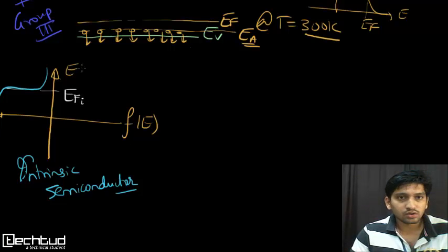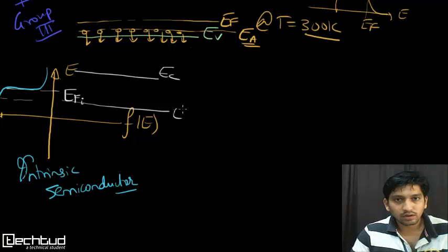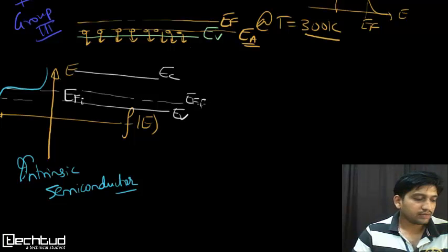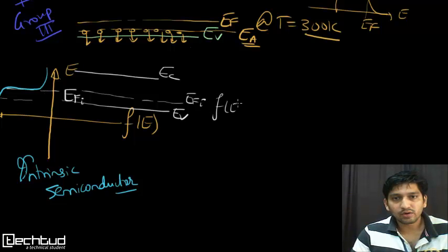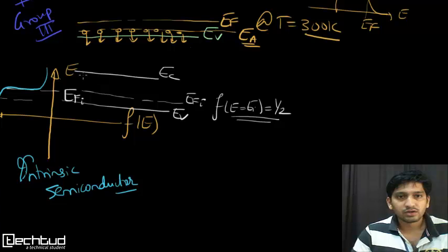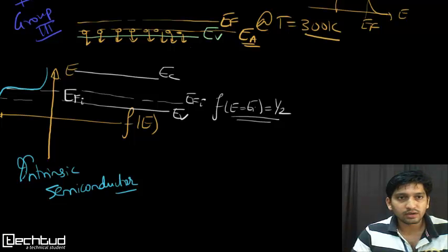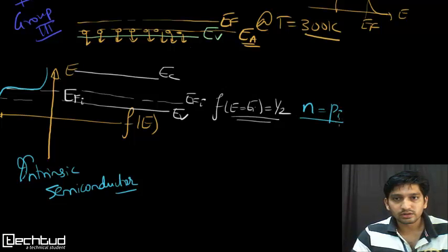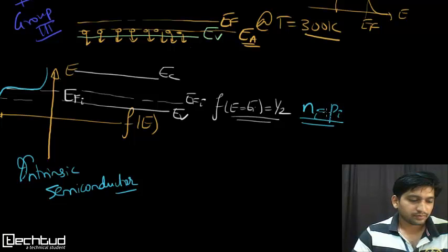For intrinsic semiconductors, the probability of finding an electron at energy level Ei is 1/2, and the electron concentration equals the hole concentration, so Ni equals Pi. For extrinsic semiconductors, we plot F(E) versus E separately. For N-type, the Fermi level EF is positioned closer to EC, and the probability of finding an electron at EF remains 1/2 by definition.